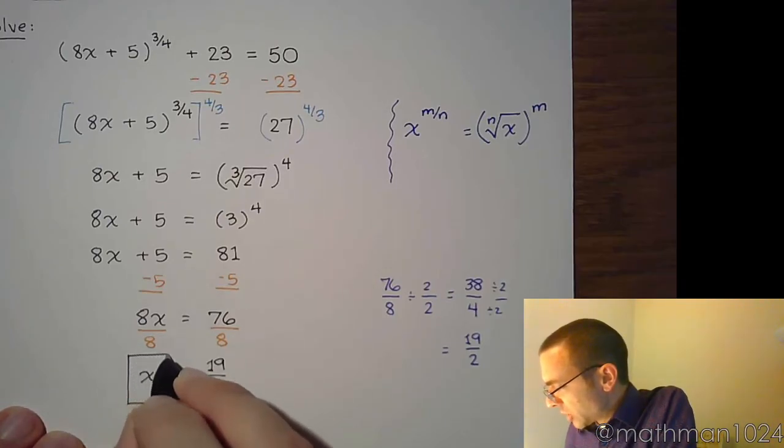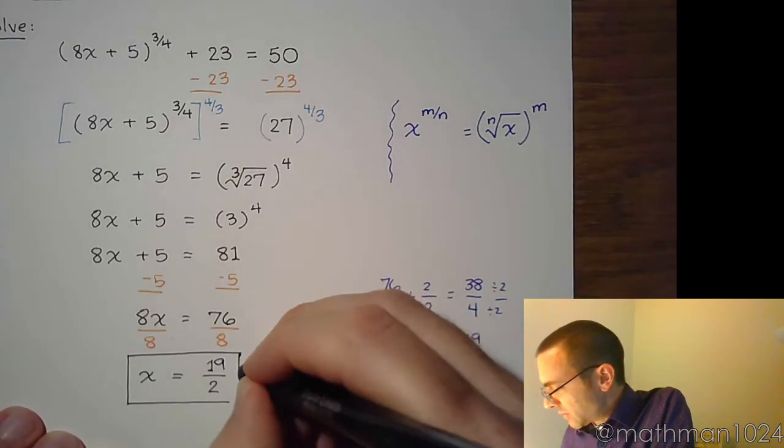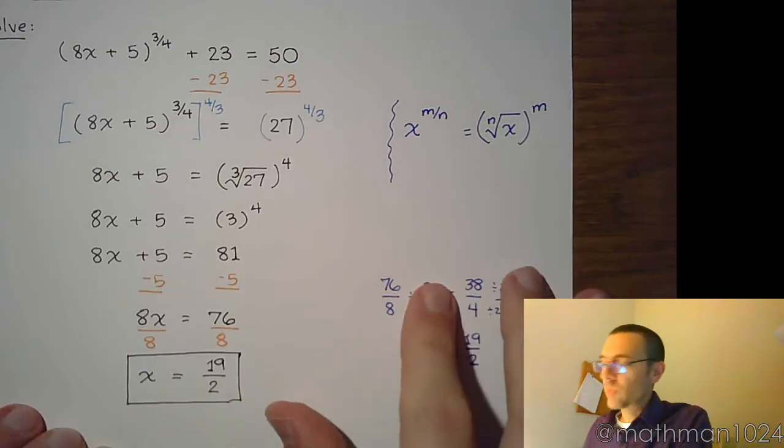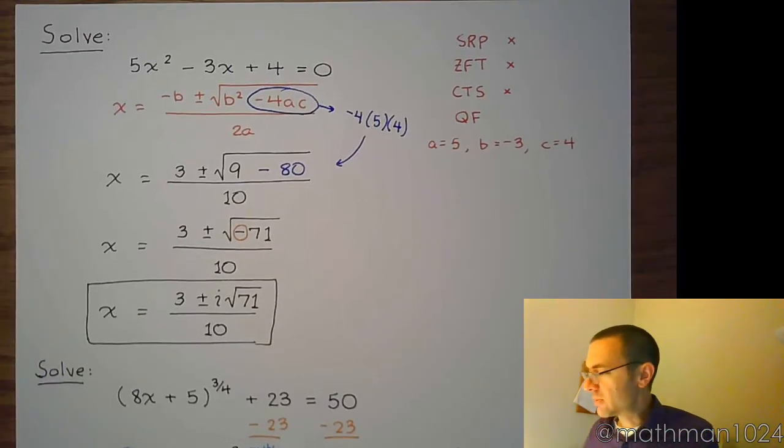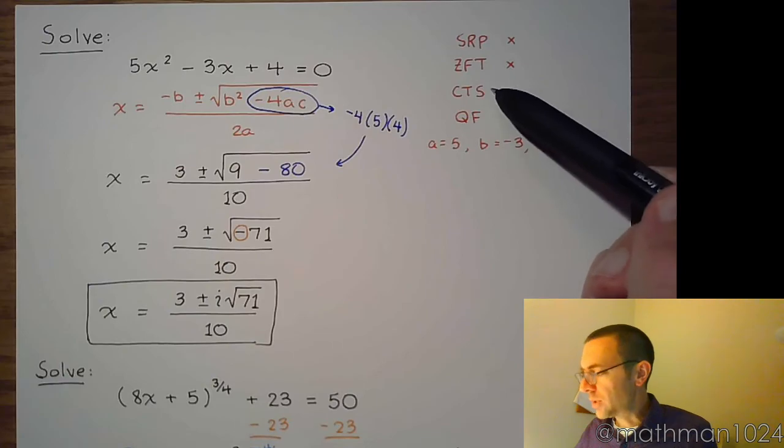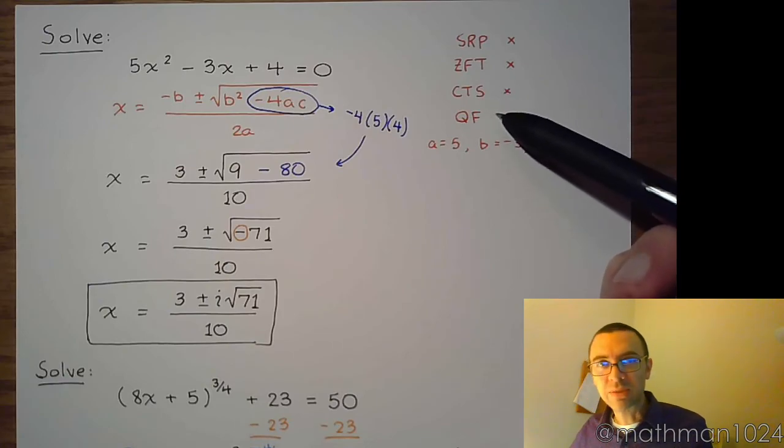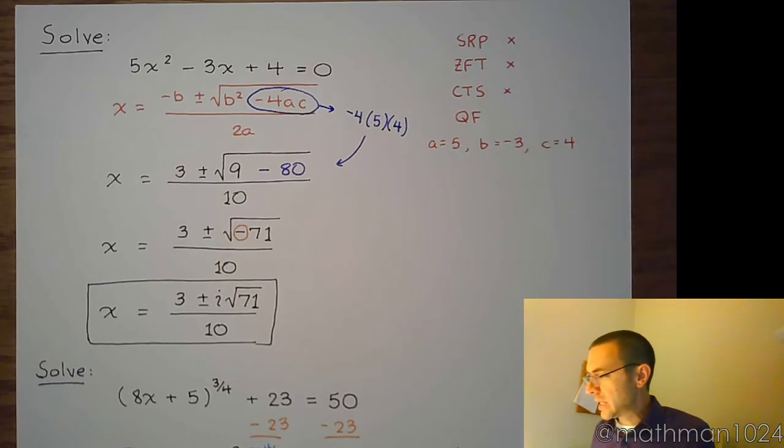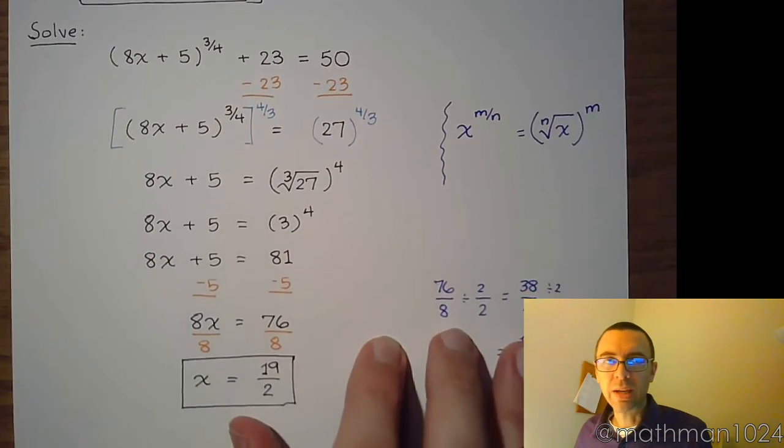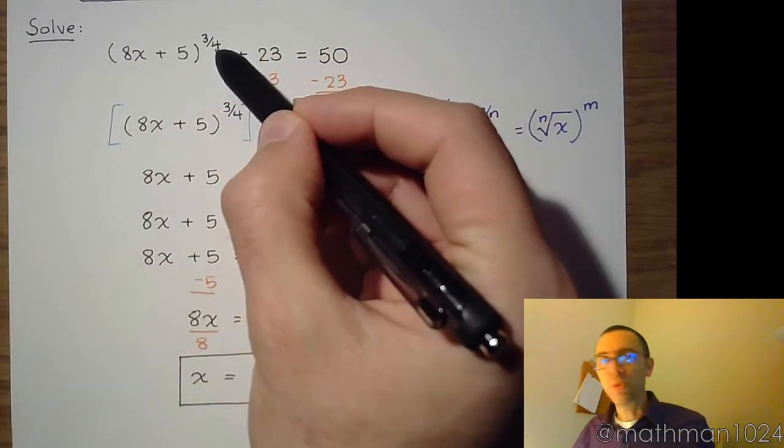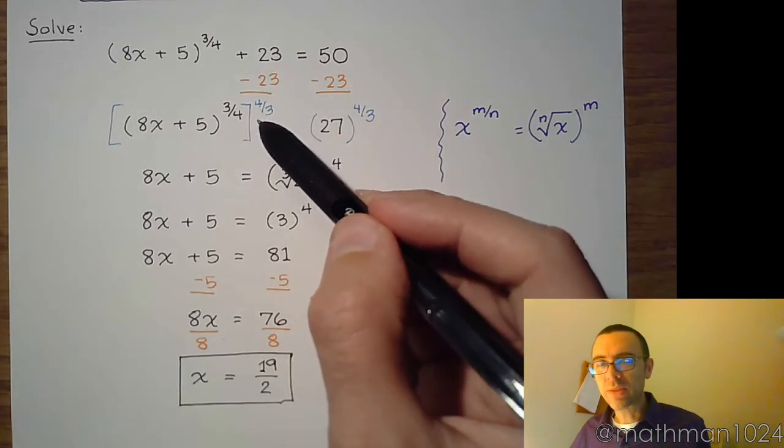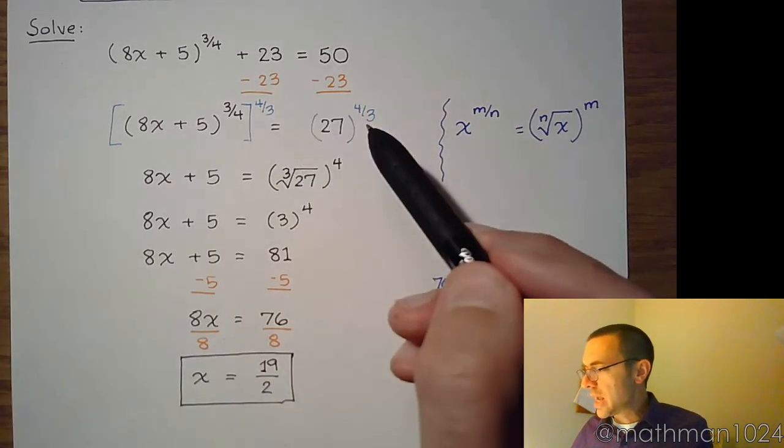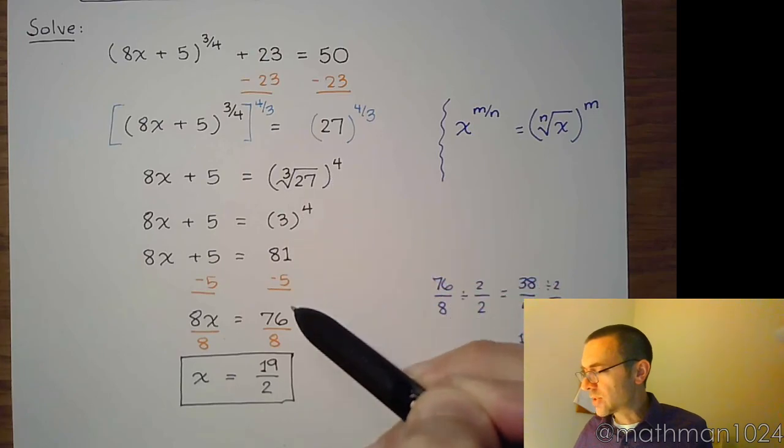So with each algebraic equation you come across, you need to identify what you have going on and how to get rid of it. When you have something that's quadratic, like the first one, think about those quadratic methods that we have. See if you can factor it or complete the square. If you can't do any of that good stuff, quadratic formula. For this other problem that we had, we had a power that we had to get rid of, so we had to use the power property once we isolated that part of the equation. And then you just simplify and solve what you have left.